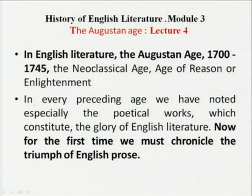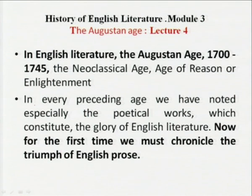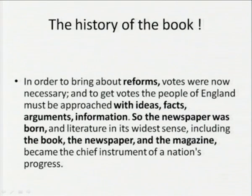In Lecture 4, we did the Augustan age, from 1700 to 1745 — the neoclassical age, the age of reason or enlightenment, where adherence to rules and decorum prevailed. For the first time, we must chronicle the triumph of English prose and the history of the book. To bring about reforms, votes were necessary, and to get votes, the people of England had to be approached with ideas, facts, arguments, and information. There was a change of government and a need for public opinion.